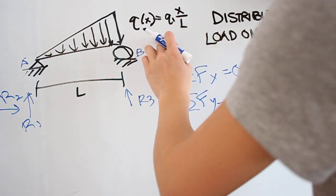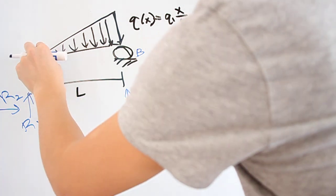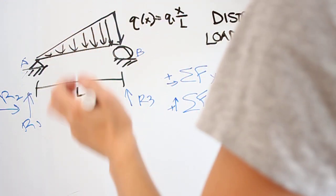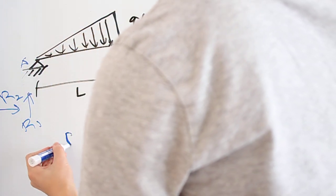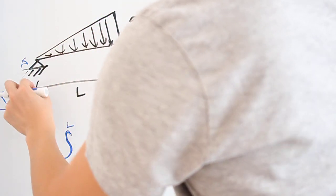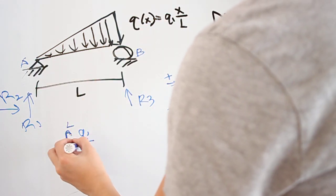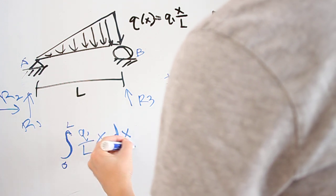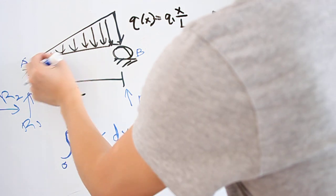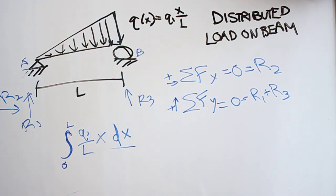Using calculus, at each point you have some value which you can plug in for x, and you want to add all those together. An integral sums up very small values over a certain distance — in our case from 0 to L. The function is described by q1 over L times x, and dx is our infinitesimally small part. So we're summing up contributions at every point from 0 to L.